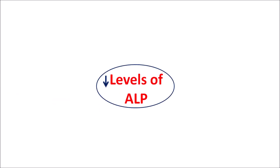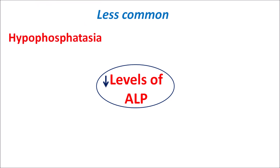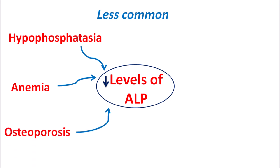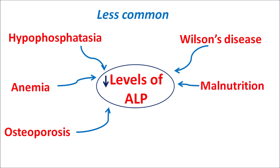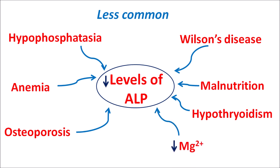Now let us see when decreased levels of ALP can be observed. This condition is somewhat less common compared with elevated ALP, but a few conditions may reduce ALP levels. Hypophosphatasia is one condition where decreased calcium levels may result in decreased ALP. Certain anemic conditions can also reduce ALP levels. Osteoporosis, particularly in postmenopausal women, can reduce ALP levels. Wilson's disease, associated with elevated levels of copper in the body, results in decreased ALP. Other conditions such as malnutrition, hypothyroidism, and magnesium deficiency can also reduce ALP levels.